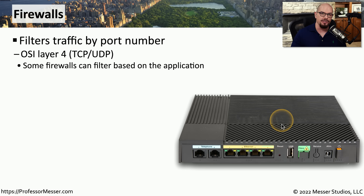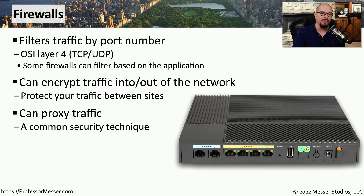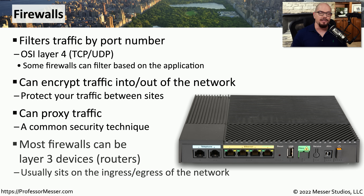Some firewalls can also act as an endpoint for an encrypted tunnel, allowing you to connect two sites together across a public network like the internet while all traffic between those sites is encrypted. Some firewalls can also act as a proxy — if someone is browsing a site on the internet, the firewall stops that communication, performs the browsing for the user, receives the response, examines it for anything dangerous or malicious, and then sends the results back to the user. In many cases, as with small SoHo routers, this firewall can also act as a router, making forwarding decisions based on the destination IP address and acting as an OSI layer 3 device.